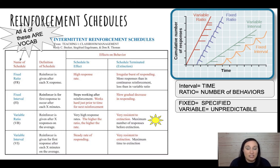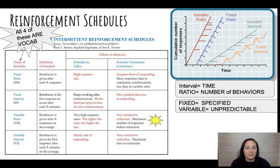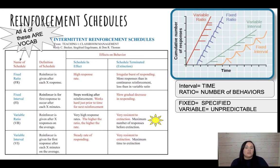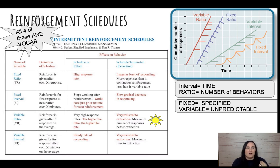Fixed ratio is a specific number of behaviors before a response — this has a high response rate and quick mastery. For example, every five times the child answers correctly, they get a sticker — that's fixed ratio. Fixed interval is about time: every 10 minutes, the child gets a sticker.